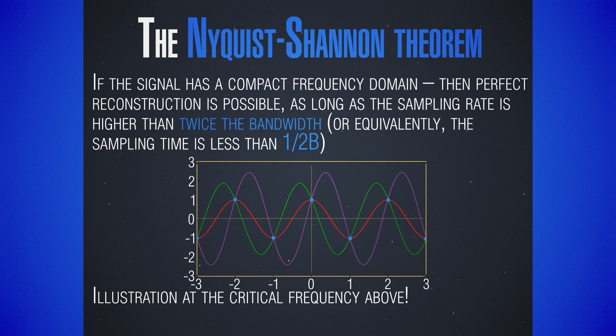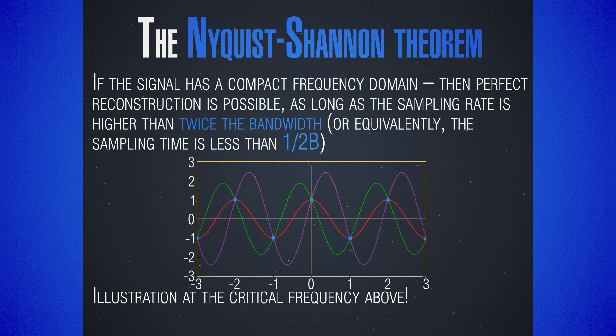The requirement is that first, our signal should have only some portion of the spectrum as its domain — it should not require the full spectrum. Second, we must sample fast enough. If we had an infinite spectrum, we would need to sample infinitely fast to meet this condition, and so a signal with an infinitely large spectrum would not be fully reconstructable after digitalization.